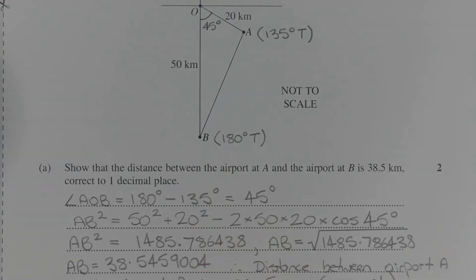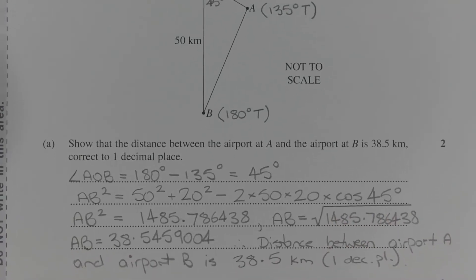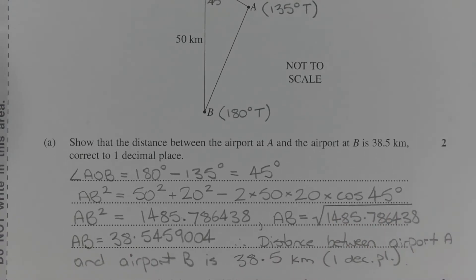Now, using the cosine rule, AB squared is equal to 50 squared plus 20 squared minus 2 times 50 times 20 times cos of 45 degrees. And evaluating the right hand side, we get AB squared is equal to 1485.786438.